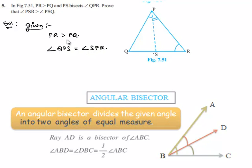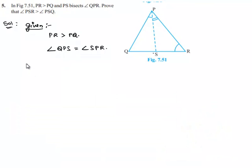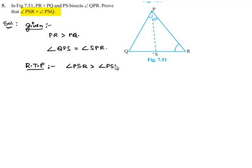Now we note down the given information and let us note down what we are required to prove. We are asked to prove that angle PSR is greater than angle PSQ. Now moving on to the procedure.